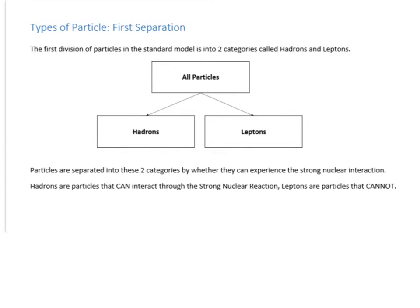Those are the four forces. Now let's look at the particles of the standard model. The first division is between hadrons and leptons. 'Hadron' comes from the Greek word meaning big, so it tends to include the larger particles, while leptons tend to be smaller. But the actual classification is based on the strong nuclear force: hadrons can interact through the strong nuclear force, whereas leptons are defined as particles that cannot. A common mistake is saying hadrons interact through the strong force and leptons through the weak — the classification is only about the strong force, since some hadrons can also interact with the weak force.